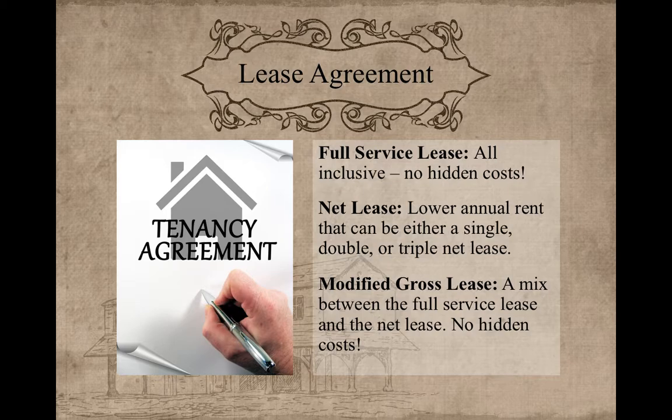The third type is a modified gross lease. This lease is fixed, which means no hidden costs or unexpected costs. Rent remains the same, and utilities and janitorial services are covered by this lease.